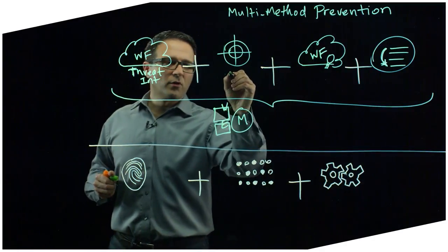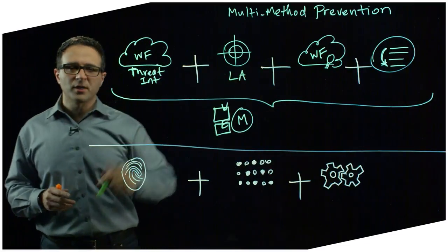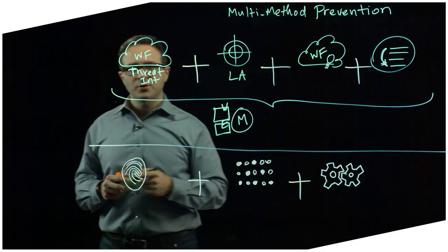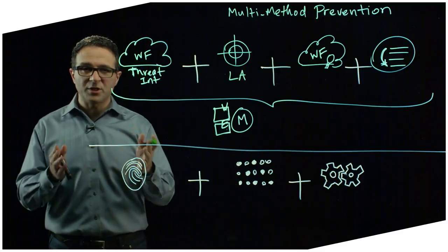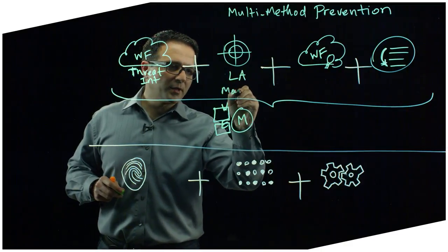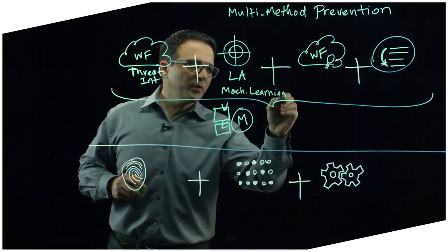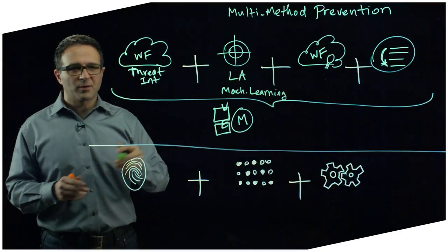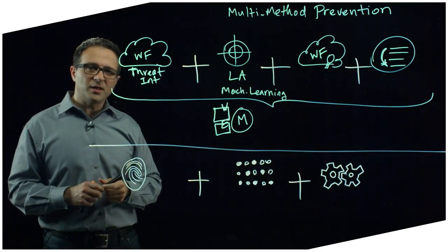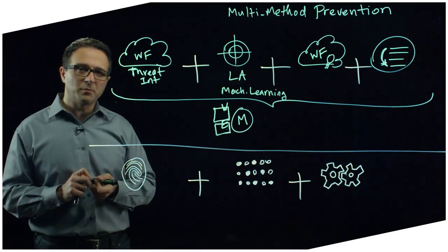We also have, for unknown malware or potentially unknown malware, a local analysis capability. The local analysis capability allows us to examine a file structure right on the system, on the machine itself, and determine whether it's likely to be malicious or benign. This uses machine learning. And the way we have accomplished this is that we've trained our machine learning algorithm using all of the threat intelligence that's stored in Wildfire so that it can immediately, by examining a file structure, determine whether it's likely to be malicious or benign.